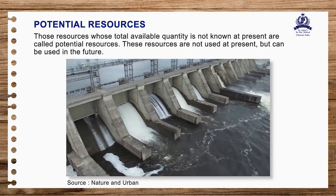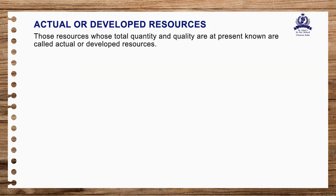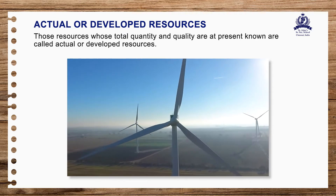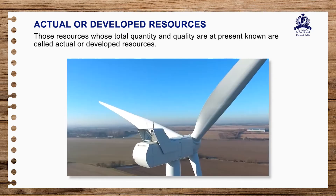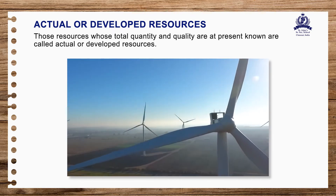In most developing countries, potential resources are not appreciably developed. Actual or developed resources: those resources whose total quantity and quality are at present known are called actual or developed resources. A survey has been conducted to find out their total available reserve. For example, wind blowing at high speed was a potential resource about 200 years ago. Today, a number of windmills have been installed in many parts of the world to harness wind energy. Windmills such as in Netherlands and Tamil Nadu now generate electricity — here high-speed wind is an actual or developed resource.